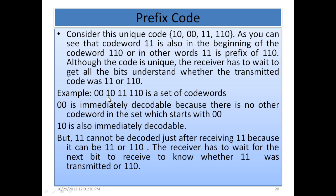For example, the set of code words {0 0, 1 0, 1 1, 1 1 0}. The codeword 0 0 is immediately decodable because there is no other code word in the set which starts with 0 0. So whenever the decoder receives two 0s one after the other, it knows that it is 0 0.